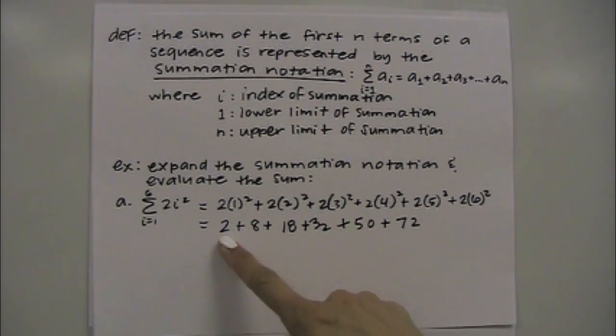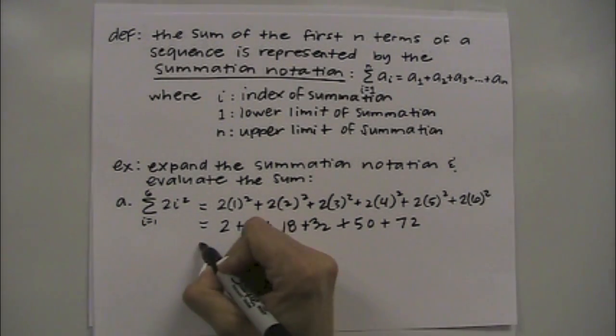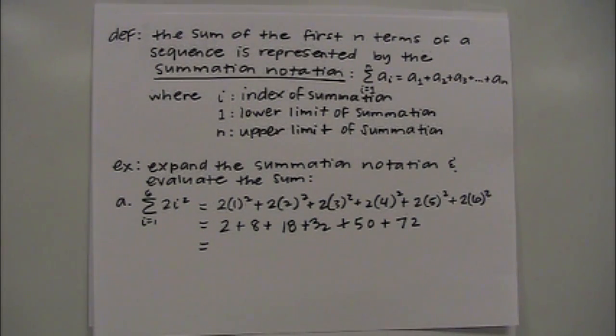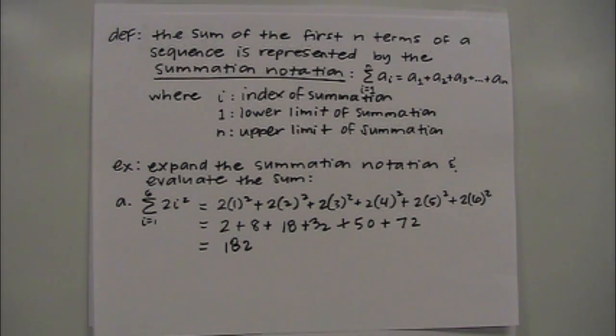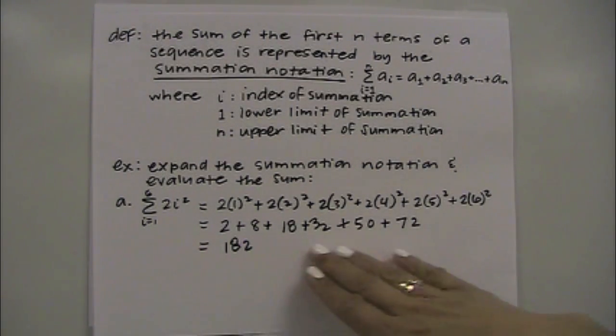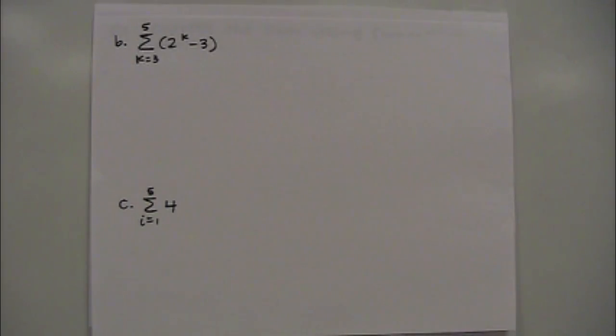So we have 2 plus 8 plus 18 plus 32 plus 50 plus 72. Add them all up, and I got 182 as your total sum. So this would be the expanded summation notation, and then here's your actual sum once you add those terms up that are in this series.